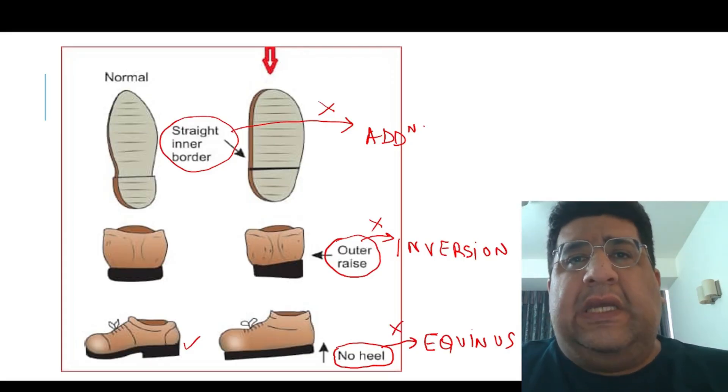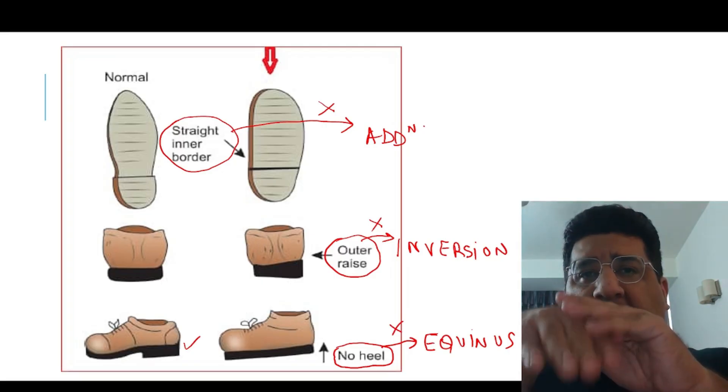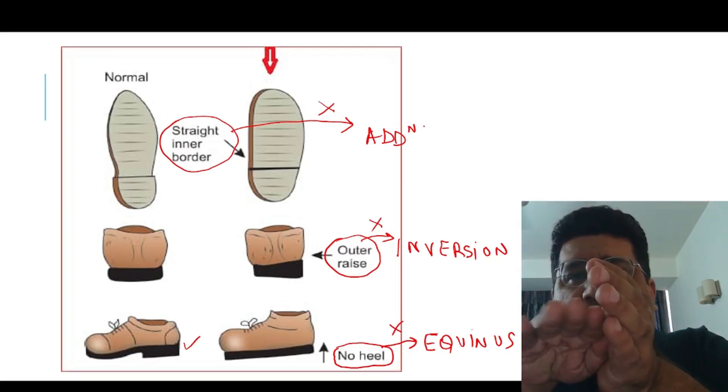So today we have understood there are three deformities. Number one: no heel to prevent equinus. Straight inner border to prevent adduction. Outer shoe raise to prevent inversion.